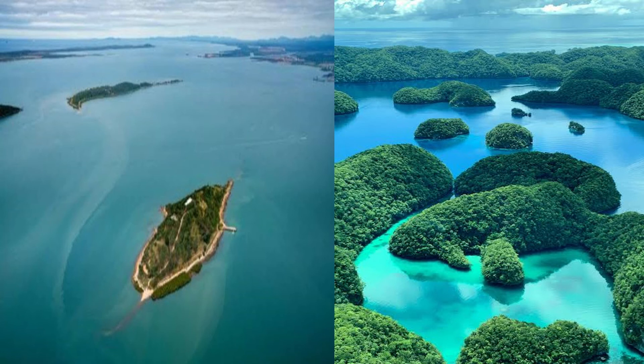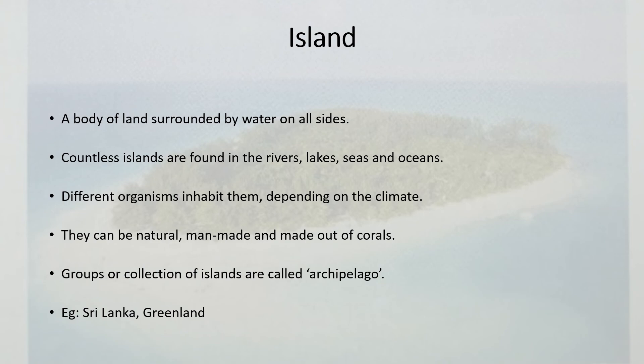In this image you can see a single island on one side, and on the other side a group of islands. A group of islands like this is called an archipelago. Islands can be big or small, and they can be found in rivers, lakes, seas, and oceans. They vary greatly in size, climate, and the kinds of organisms that inhabit them.